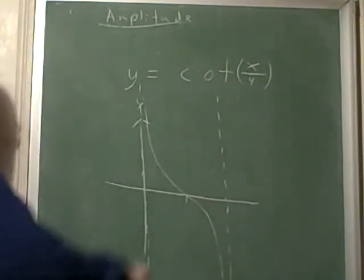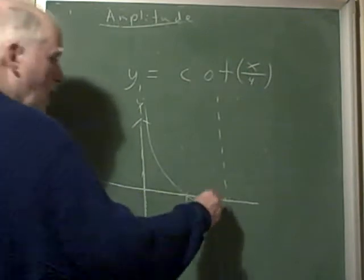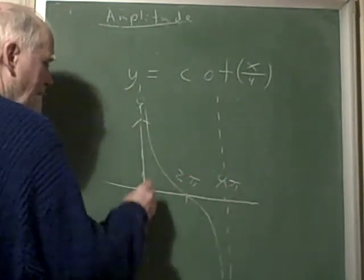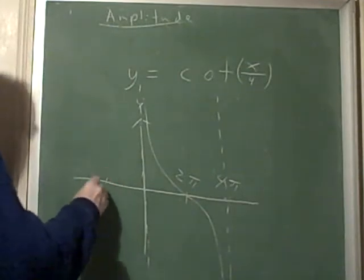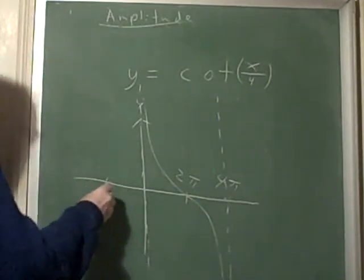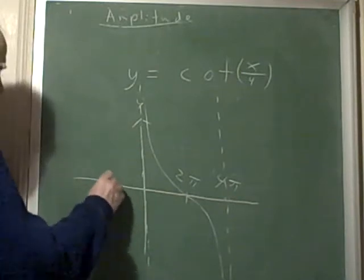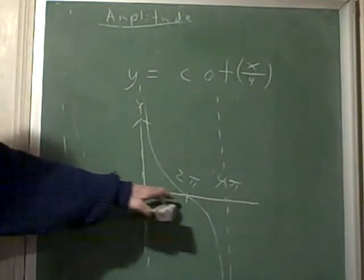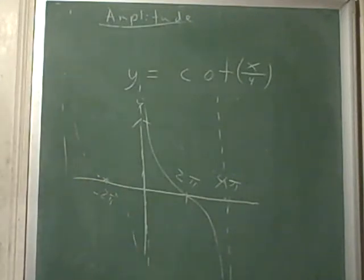Once you have it graphed, then you say well this is 4 pi, this is 2 pi, and this of course is 0. It would do the same thing at negative 2 pi and have another vertical asymptote. This is the basic cotangent function.